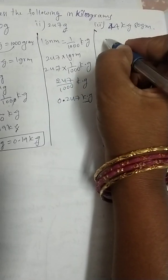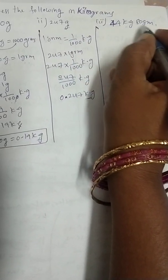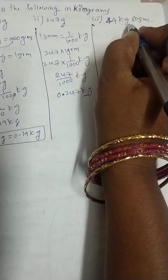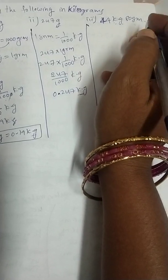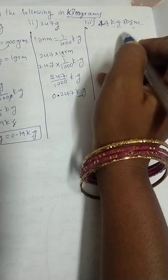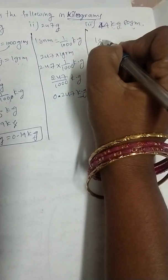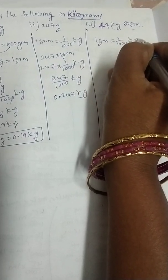Here also, same process. 44 kg 80 grams, both are in different units. You should convert this kilograms into grams, then convert into kilograms. Either way, we want only kilograms means these grams we need to convert into kilograms. For that, already we know 1 gram is equal to 1 by 1000 kilograms.